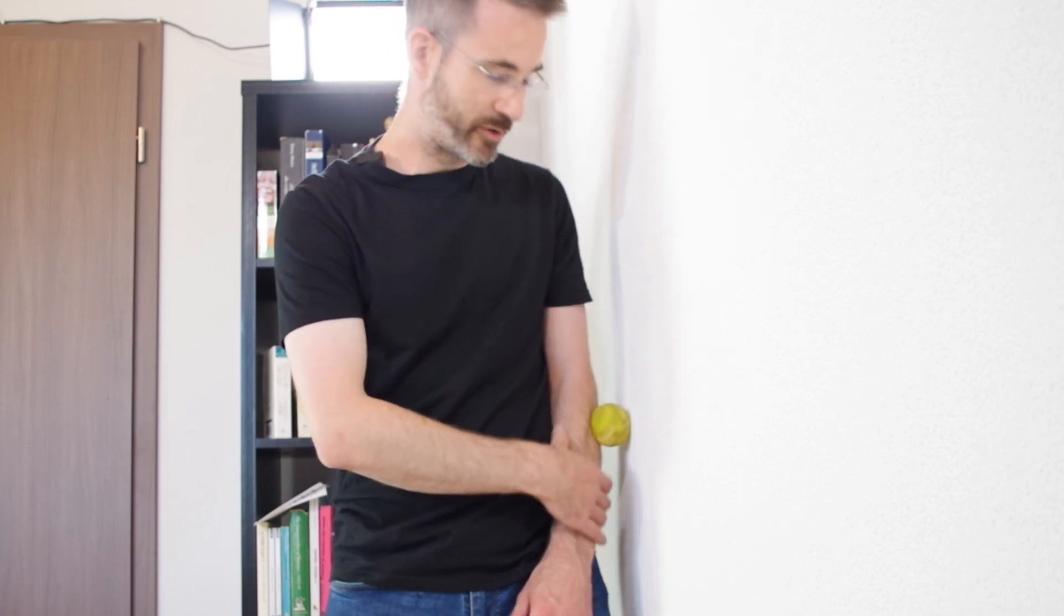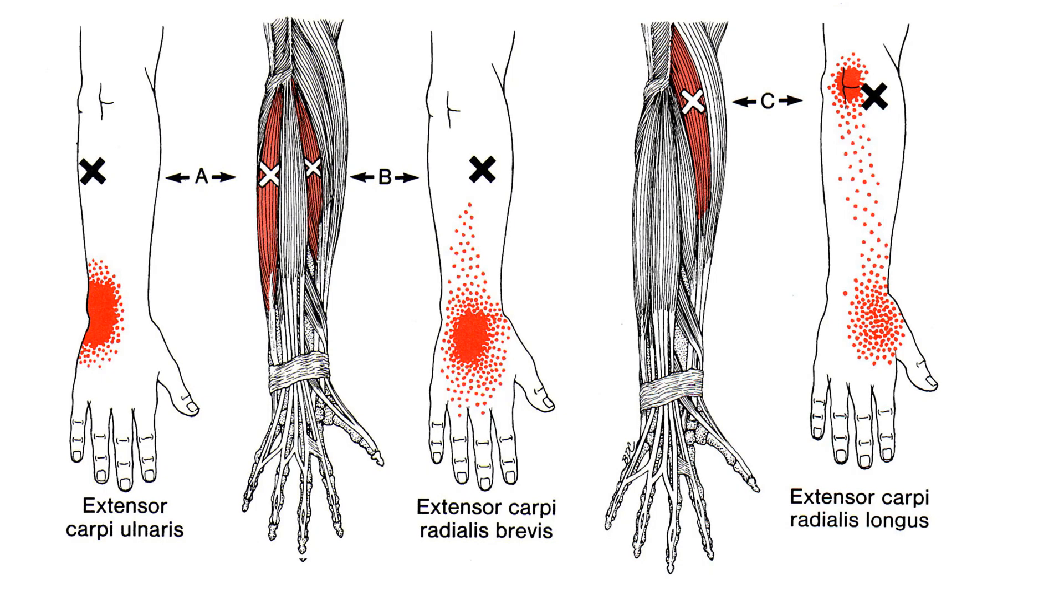And the idea is that you will follow the muscle fibers like this, and then move the ball a little to really look for the point that triggers pain in a distant area, typically on your wrist or something. Here I got one.